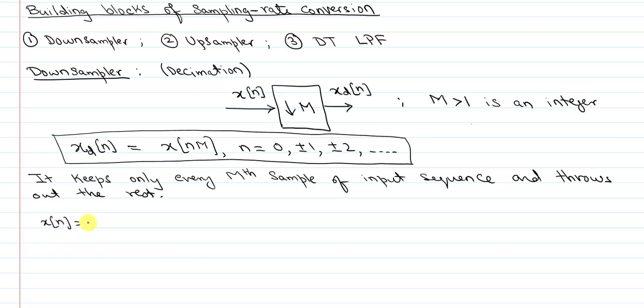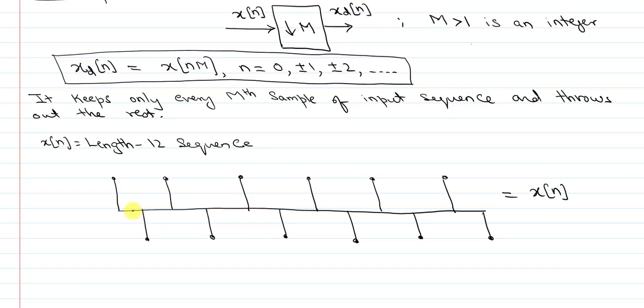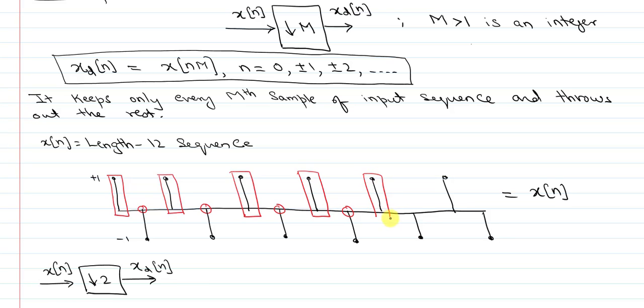So xn take to be a length 12 sequence. So everything else is 0. So here is xn, it is plus 1 minus 1, and length 12. So what happens if I take xn and I down sample it by a factor of 2 to get xd of n? So xn, as the expression says, we will keep a sample throw out one sample, keep a sample throw out one sample. So in this case, we'll start with n equal to 0. So we'll keep this sample throw out one sample, keep this one throw out one, keep this one throw out one, keep this one throw out this one.